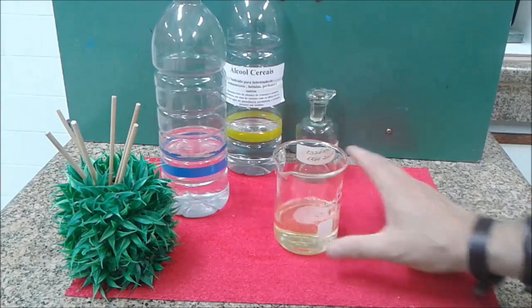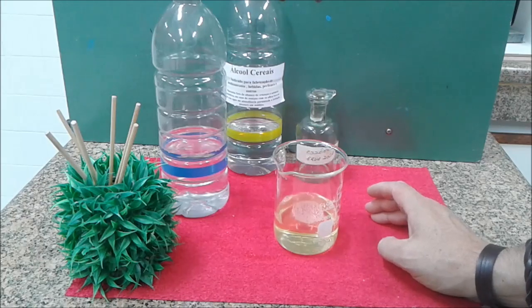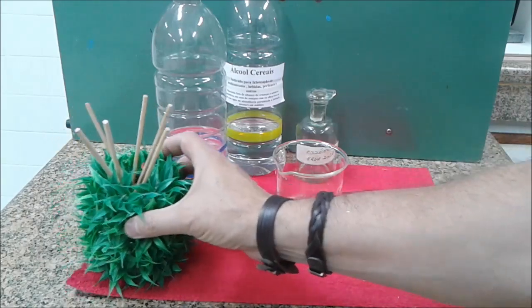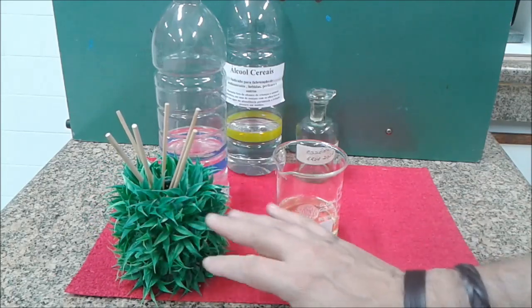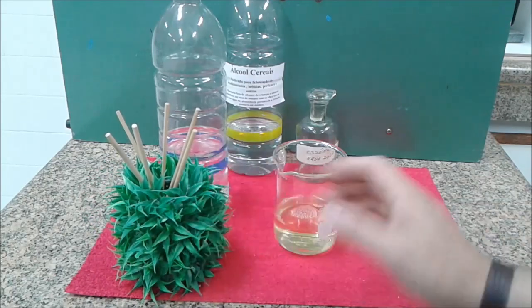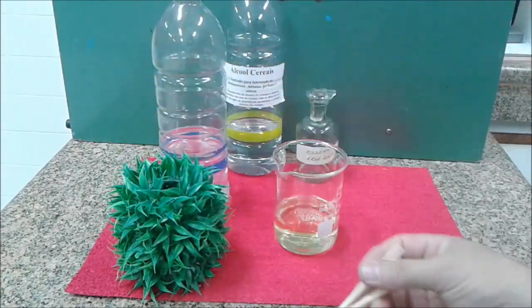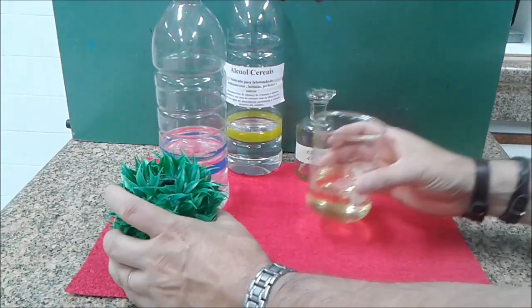Ok, então finalmente finalizamos a mistura. Você pode estar acrescentando corante. Como no caso o meu frasco ele é coberto por uma folhagem de plástico aqui, então não há necessidade do corante. Vamos tirar aqui os palitinhos e basta despejar o aromatizador no frasco.